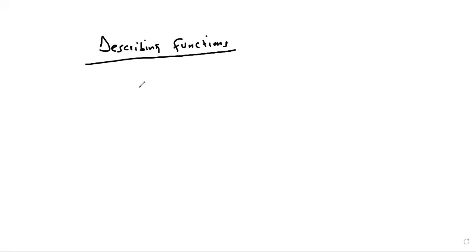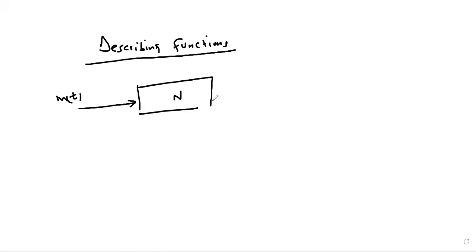The non-linearity is subjected to an input which is a sinusoid m(t) to obtain an output n(t). N(t) is not necessarily sinusoidal but it is periodic. From that we can derive a describing function of any given form of non-linearity by subjecting it to a sinusoidal input and observing its periodic output. While carrying out our analysis we make the following assumptions.